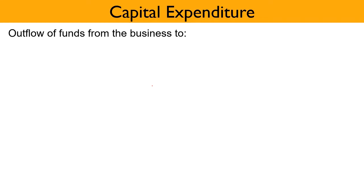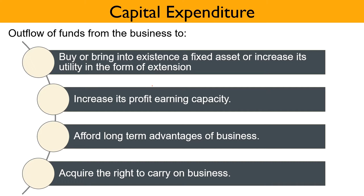Moving on to Capital Expenditure. Capital Expenditure refers to an expenditure that the firm incurs with the objective of obtaining long-term advantages for the business. It involves outflow of funds from the business to buy or bring into existence a fixed asset or increase its utility in the form of extension, increase its profit-earning capacity, afford long-term advantages of business, or acquire the right to carry on business.